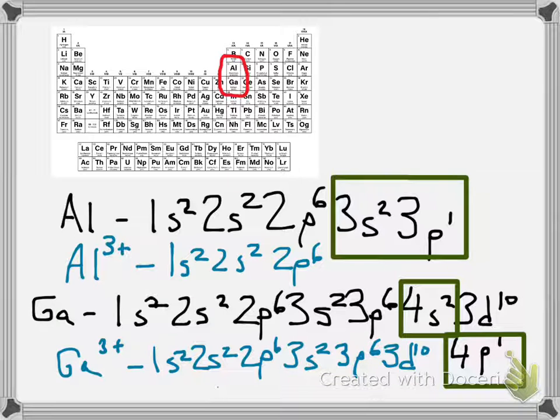One thing that's true is that when you make an ion sometimes it's helpful to just list the principal numbers out in order. In other words, write out gallium three plus as 1s²2s²2p⁶3s²3p⁶3d¹⁰4s²4p¹.